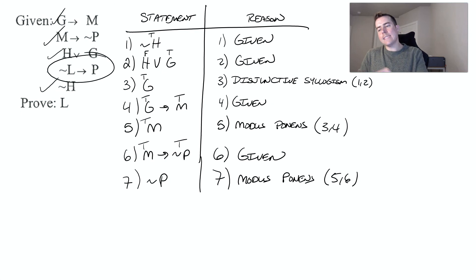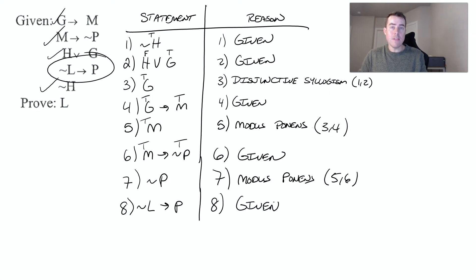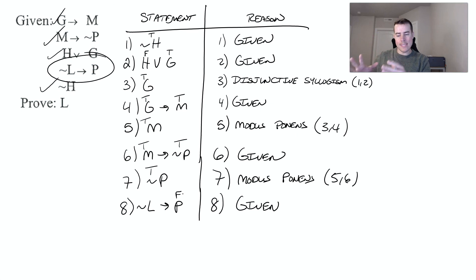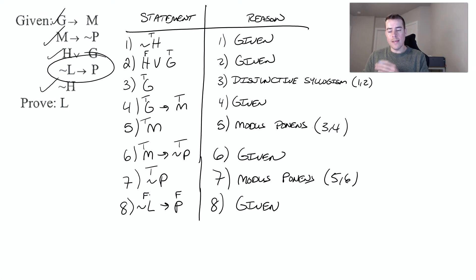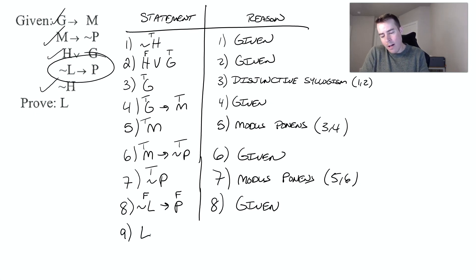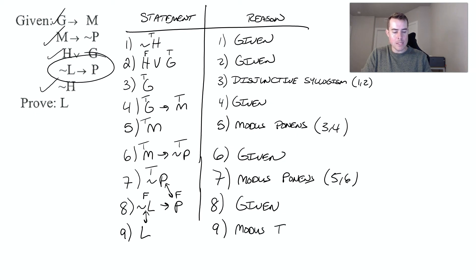The last statement we have is not L implies P, which was given. Since not P is true, P is false. For a conditional to be true, either both parts are true or the hypothesis is false. Since the conclusion P is false, the hypothesis not L must be false. Since not L is false, L must be true. We used not P and not L to conclude L — those are opposites — so this is modus tollens, from lines seven and eight.